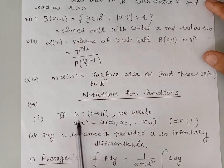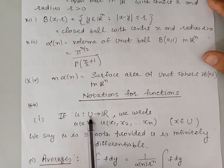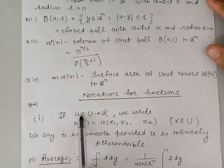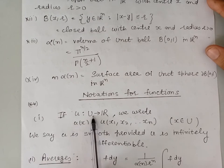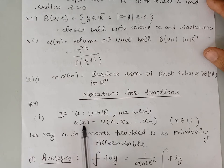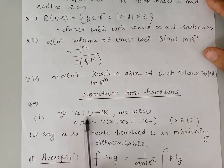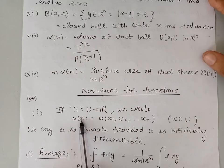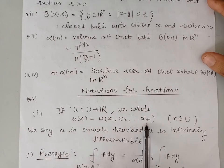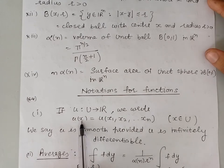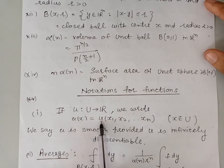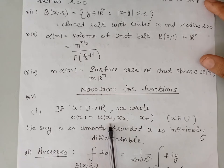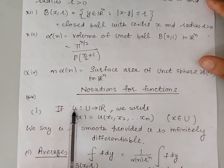Here, we will denote a function from the set U into the set of real numbers by the letter small u. So if we take a function from U into R and we take an element x belonging to U — here U is a subset of n-dimensional real Euclidean space — then x will have n coordinates x1, x2, x3 up to xn. The value of function u at the point x will be given by u at (x1, x2, x3, ..., xn). We see that this function u is smooth provided it is an infinitely differentiable function.